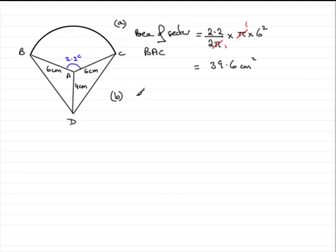So we should be able to say that angle D, A, C is equal to 2 pi radians minus the 2.2 in here. And then whatever's left over, we just simply divide by 2.